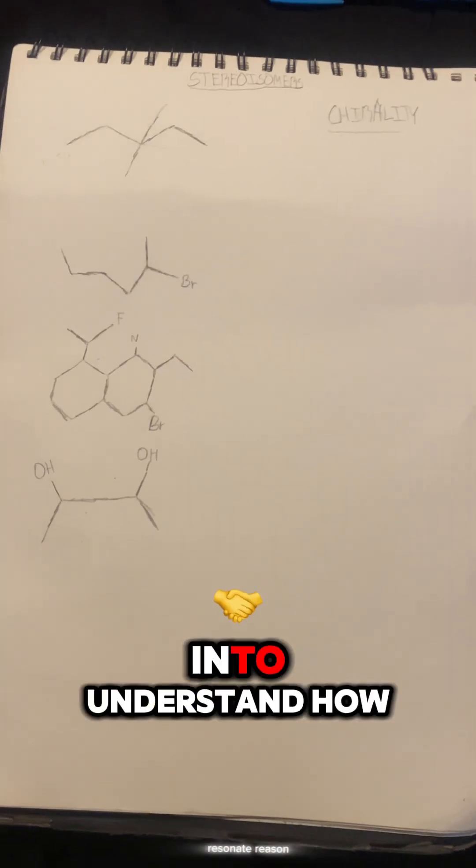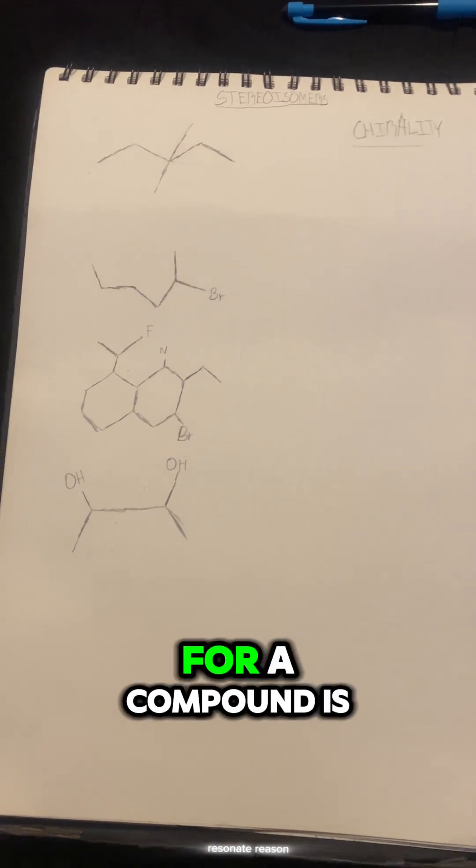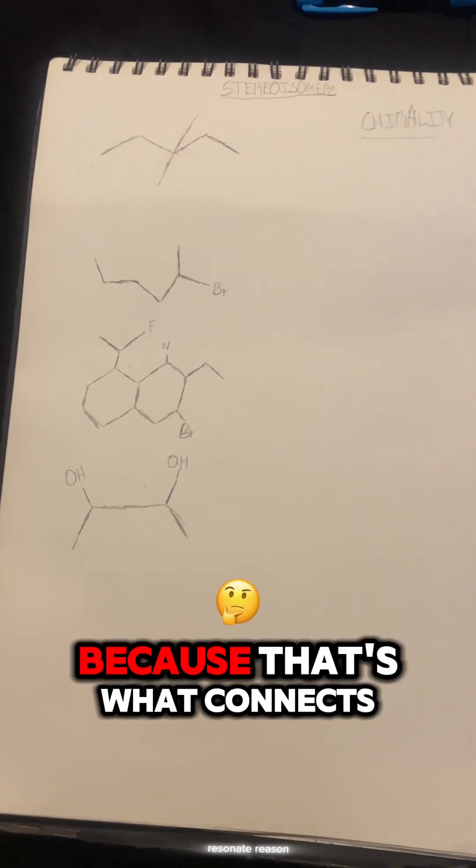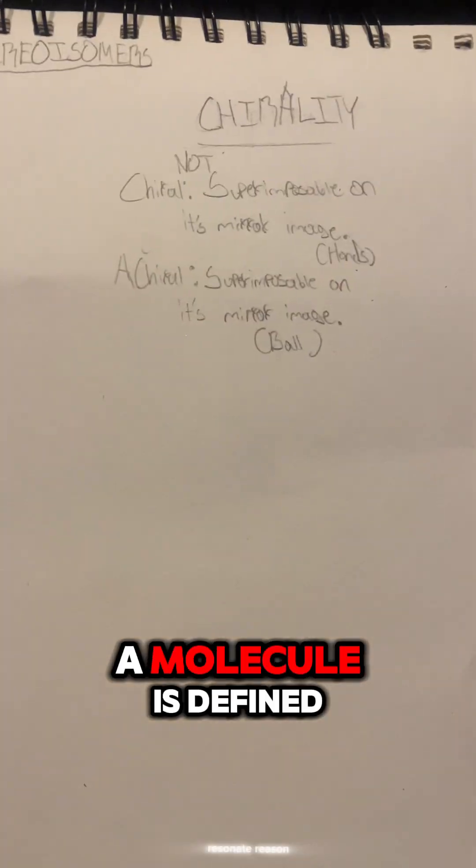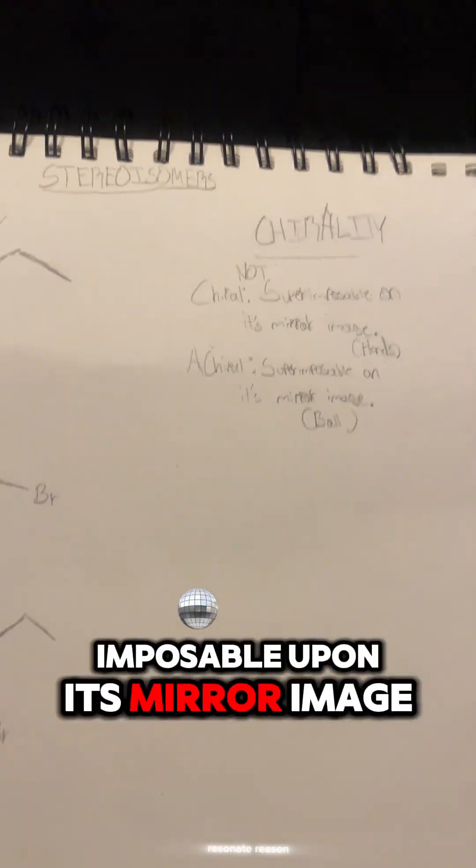the first step into understanding how to find the number of possible stereoisomers for a compound is understanding chirality, because that's what connects everything within the subject. A molecule is defined as chiral if it's not superimposable upon its mirror image.